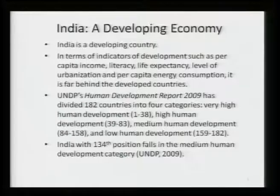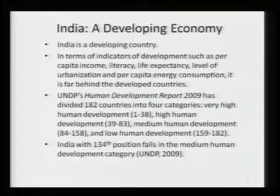So that means we are at the medium level of human development if you use UNDP categories, but from my perspective it is actually low human development. They have classified certain African countries at very poor values of HDI and low human development. So we can somehow escape that lowest level, but you can imagine — out of 182, we are at 134th position.